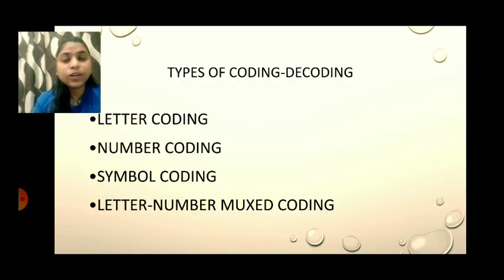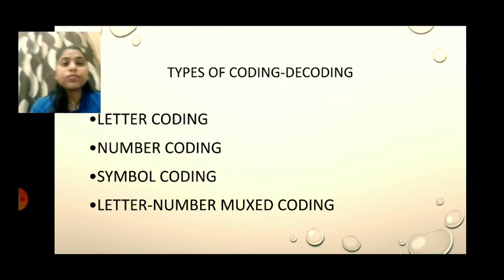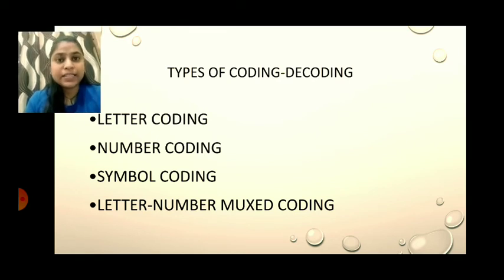To understand coding firstly, coding ka matlab ye hai agar humne kisi cheez ko, kisi bhi thing ko, kisi bhi numbering ko kisi cheez mein code kar diya hai. Jaisa yahan types aapko de rakhe hain. Pehla jo type aapko de rakha hai wo hai letter coding, number coding, symbol coding, letter-number mixed coding. Toh ab hum ek ek karke saari coding ko discuss karenge aur inke questions karenge.